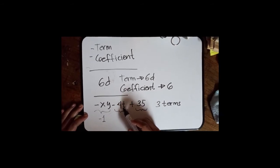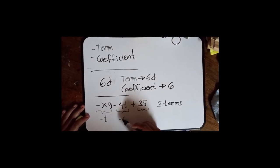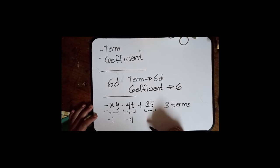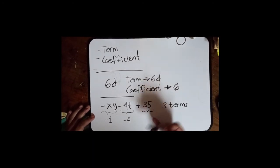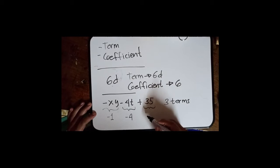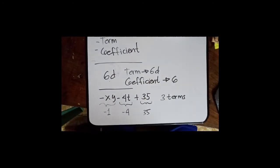And for this term the coefficient is negative 4, and of course we have a whole number here that is 35.